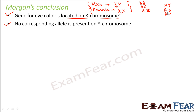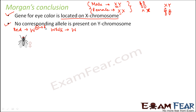Now, what difference does it make if there is no corresponding gene on the Y chromosome? Let us understand how red-eyed or white-eyed male or female Drosophila would look chromosomally. Red eye color is dominant, denoted as w+, while white eye color is recessive, denoted as w.